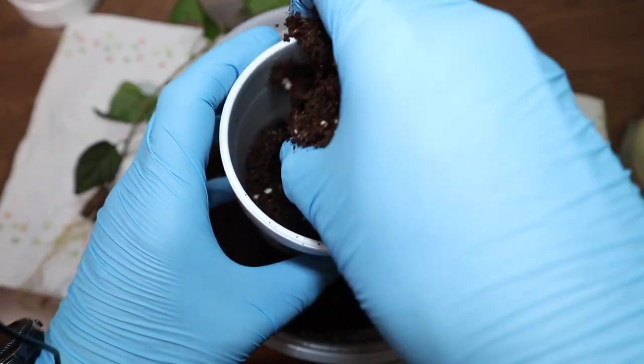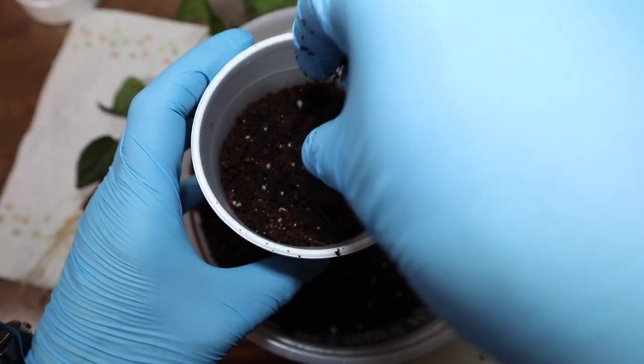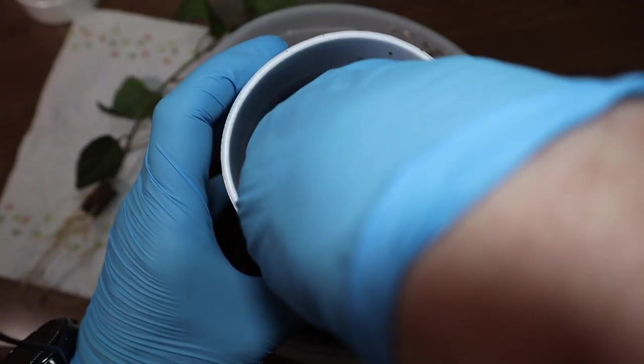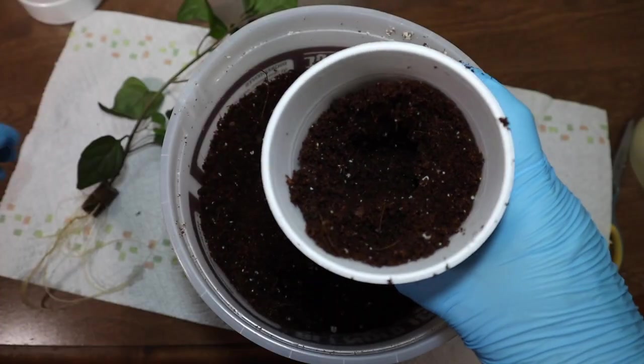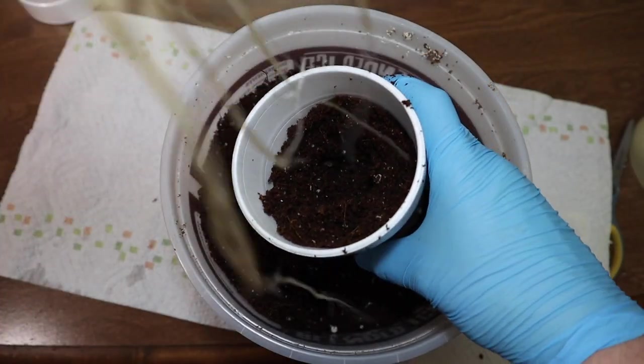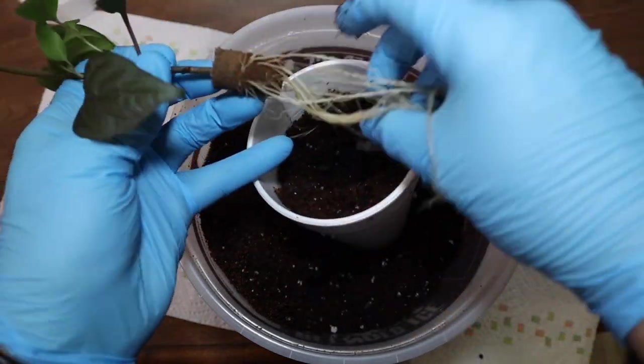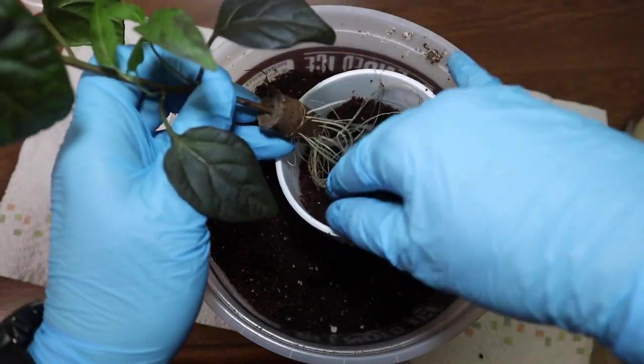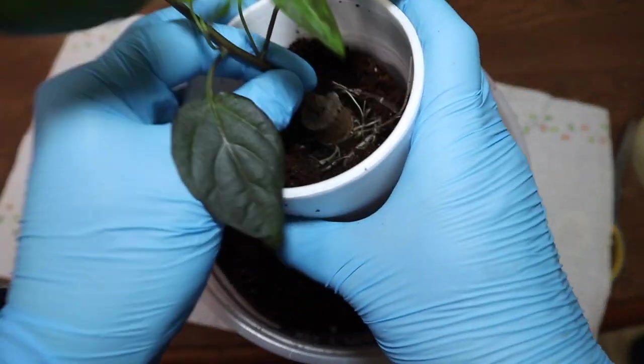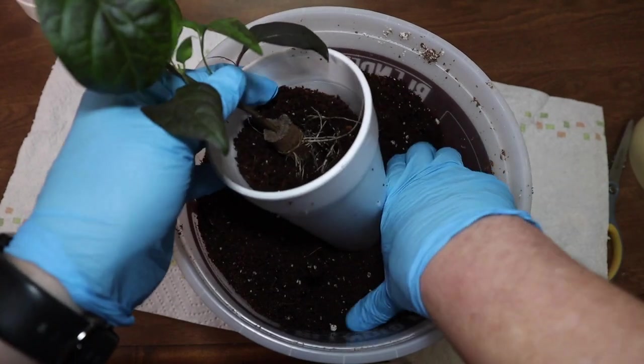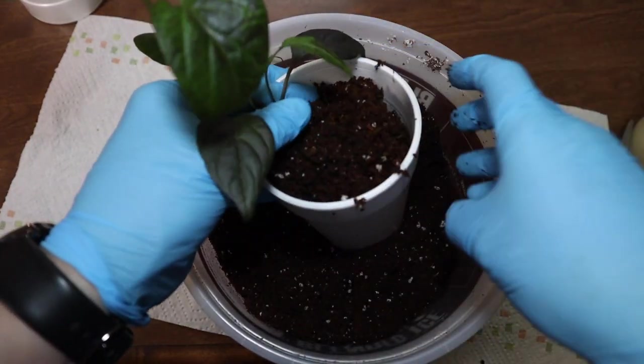You could use any kind of well draining potting mix. I like cocoa coir because it drains well. It allows for root mobility. So I leave kind of like a little indention. Here's my plant. Try to get these roots spread out as well as I can. Kind of shake it a little bit. And just fill the potting mix in around it.